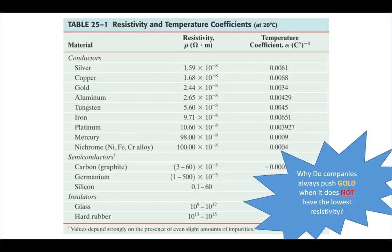Here is a quick list of resistivity and temperature coefficients. You can see different conductors: silver, copper, gold, aluminum, tungsten, iron, platinum, mercury, nichrome, and so on. The lowest resistivity belongs to silver and copper, followed by gold and aluminum. We jump up a lot with tungsten, iron, platinum, and mercury. Nichrome doesn't conduct very well at all. Semiconductors are typically made of germanium, carbon or graphite, and silicon. We have great insulators in hard rubber and glass. Why do companies push for gold when it doesn't have the lowest resistivity? Turns out silver is a better conductor than copper, but copper is much less expensive, which is why we typically use copper.